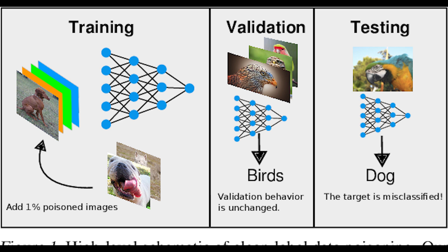Since models are trained and retrained with new datasets at specific time intervals, it's not an easy fix. Reverting the data poisoning effects are time-consuming as well, since it will take a while to identify all the bad data samples and remove them.